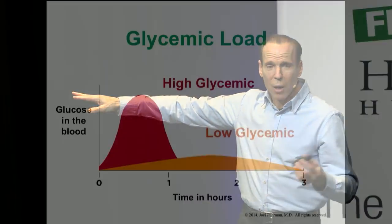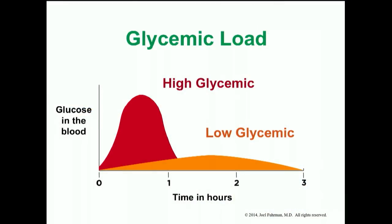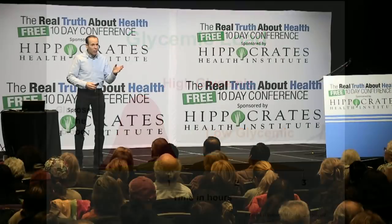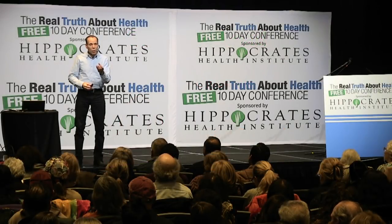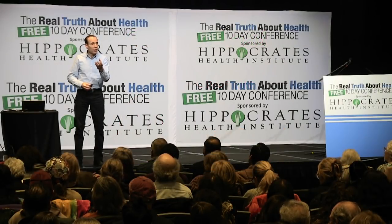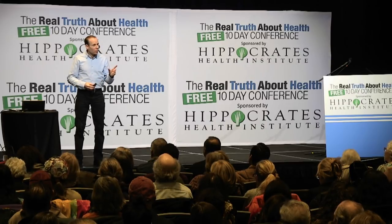When you're eating beans and nuts and greens, which are high-protein foods — beans have 30% protein, as much as meat, as much as burgers — because some of the carbohydrate in beans is resistant to enzymatic degradation and doesn't get digested, the actual absorbable protein content of beans is more than 30%.